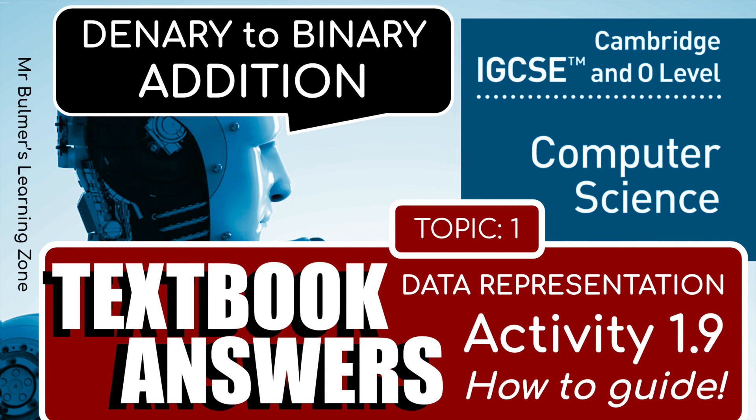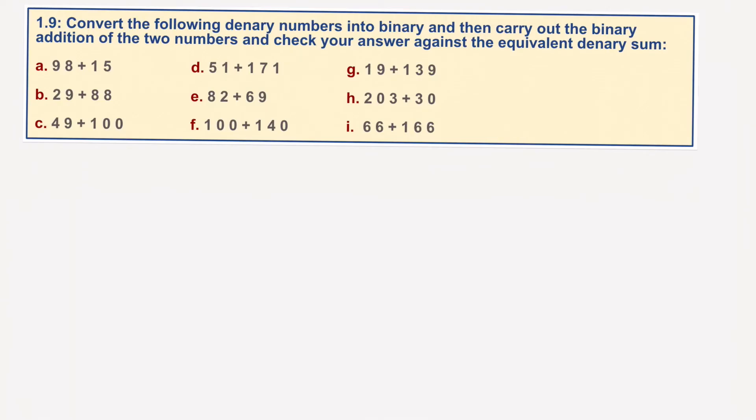Okay, welcome back. We're going to have a little look at 1.9 from Topic 1, or Chapter 1 from the textbook. I don't know why anybody would need to do this, but we're going to convert two denary numbers into binary, add them together, and then check to see if they're the same as what they would have been in denary.